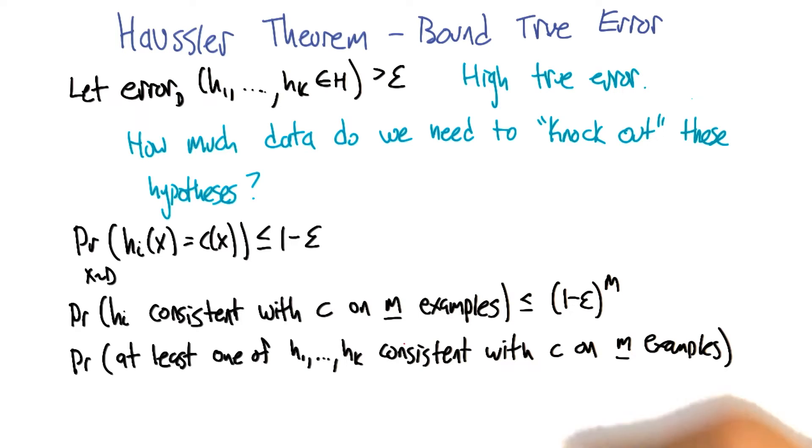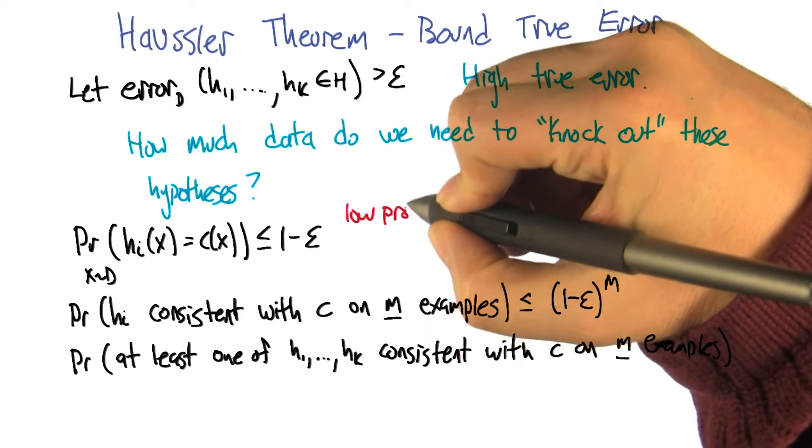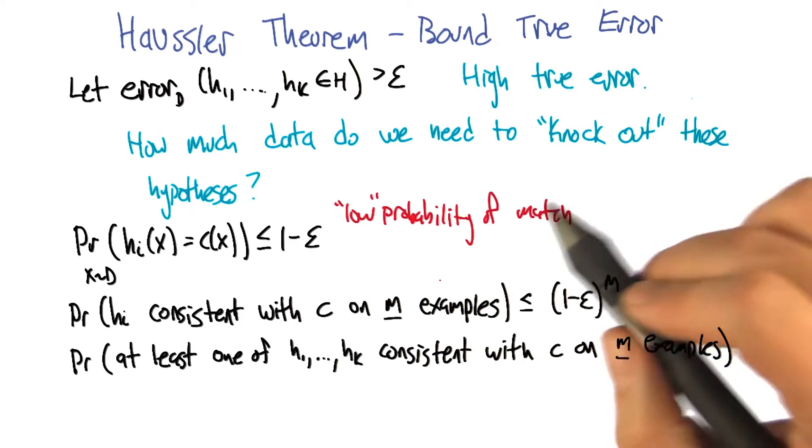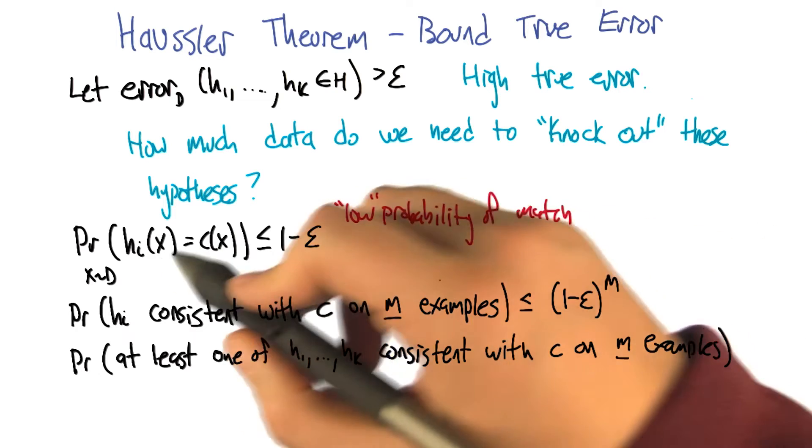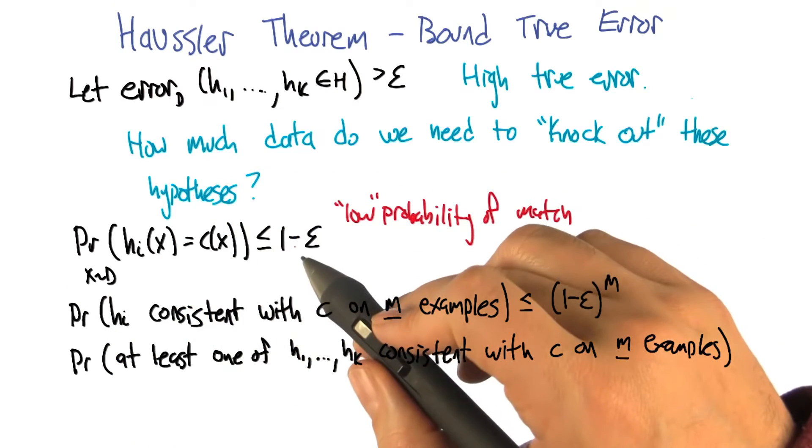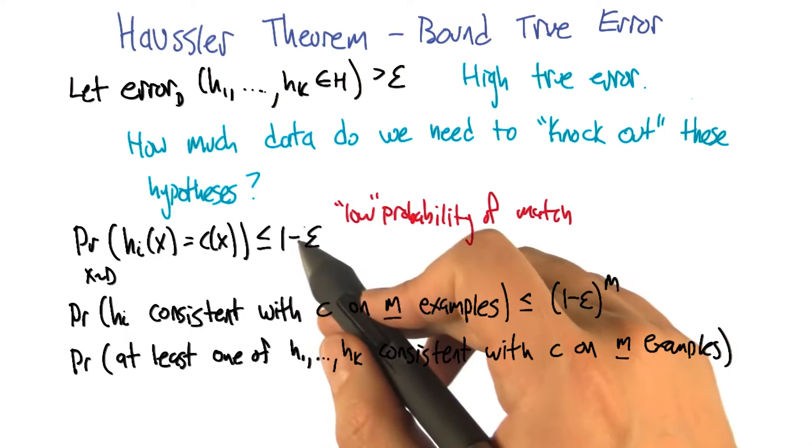That's right. Yeah. So it's sort of a relatively low probability of match. Well, if epsilon is high. Low relative to 1 minus epsilon. Right. Okay. So this is a fact about the hypothesis in the abstract.